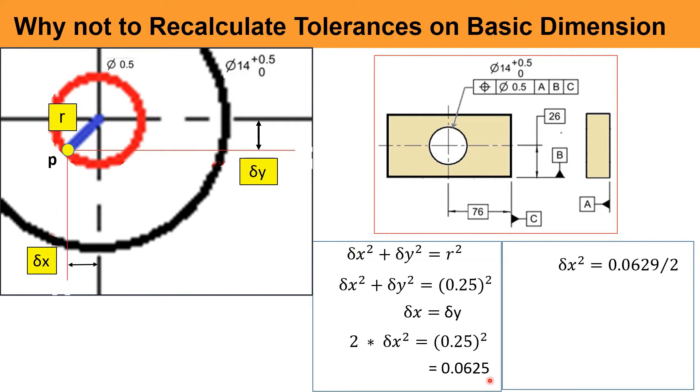Now, delta X square is equal to 0.0625 divided by 2. So, value comes delta X square is equal to 0.03125. And finally, delta X is equal to 0.177. As we know, delta X is delta Y. So, delta Y is also 0.177. So, the offset in X-axis and offset in Y-axis recalculated from the diametrical tolerance zone is 0.177 in both the axes.